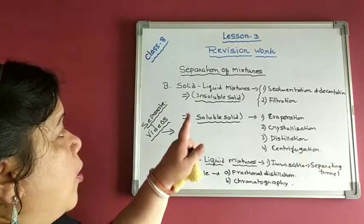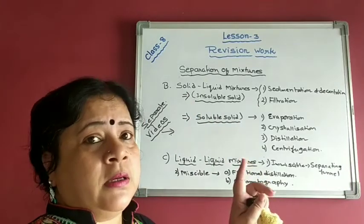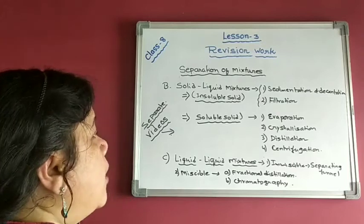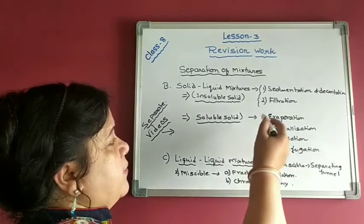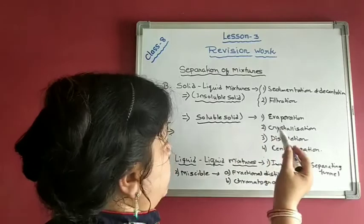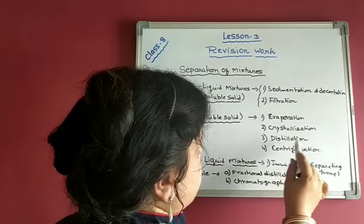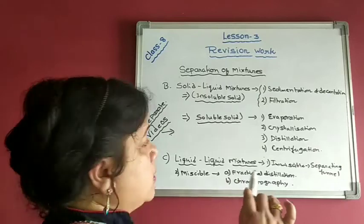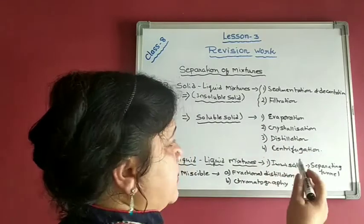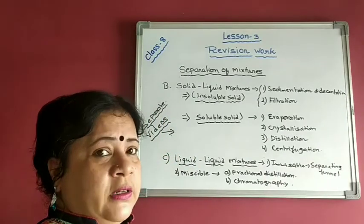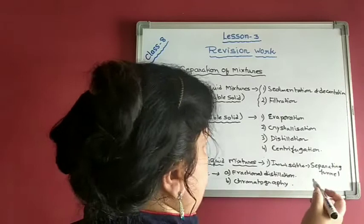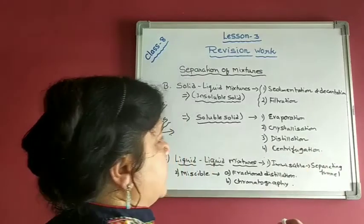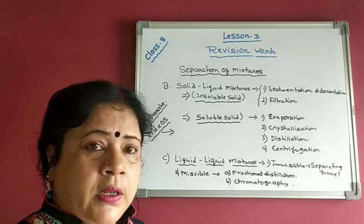Remember all the definitions, principles, examples, and the components obtained in these processes, as they are important. For soluble solids, we have learned evaporation, crystallization, distillation, and centrifugation. Evaporation and crystallization are very close to each other — crystallization involves slow evaporation followed by slow cooling so that crystals come out. These four processes are done for solids that are soluble in liquid.